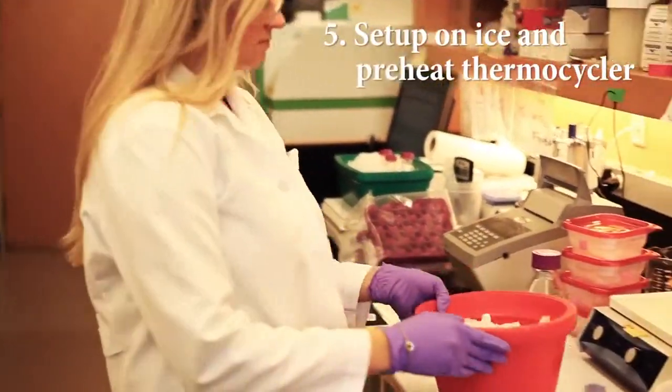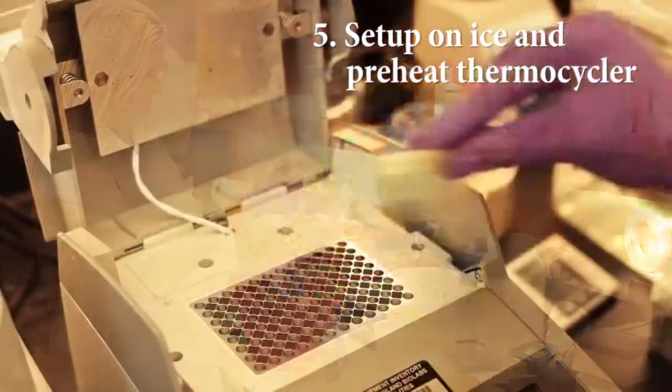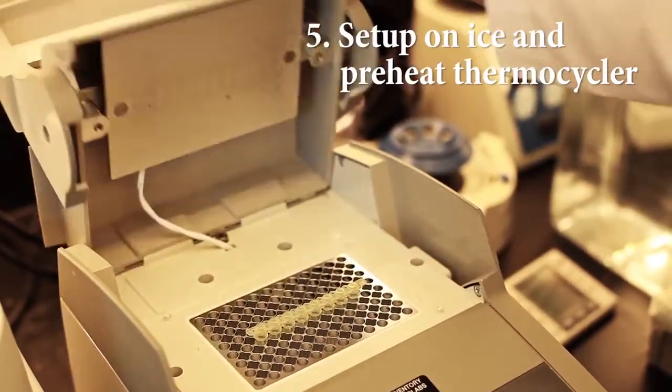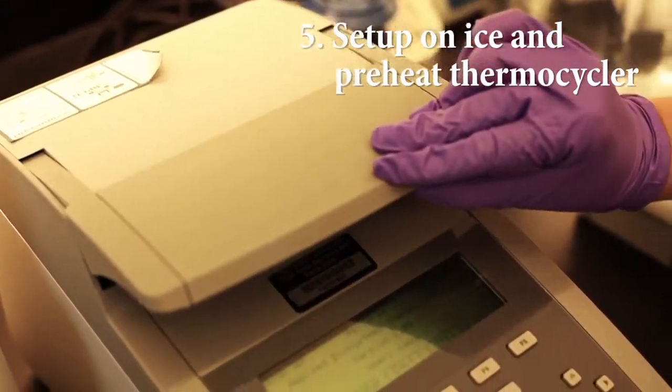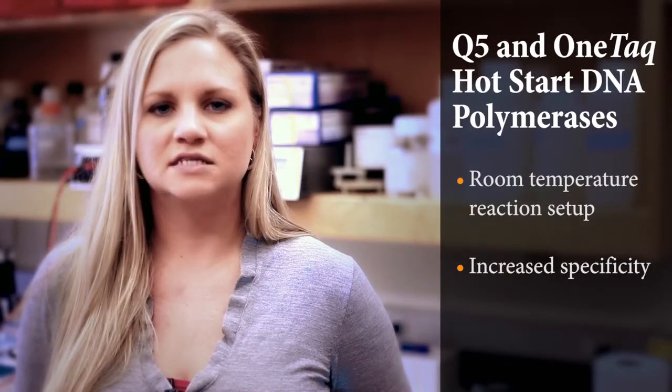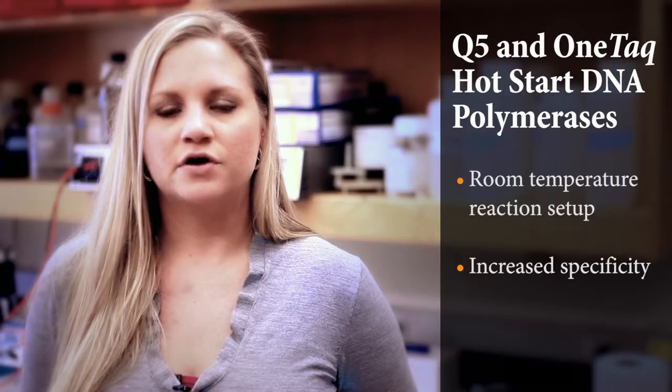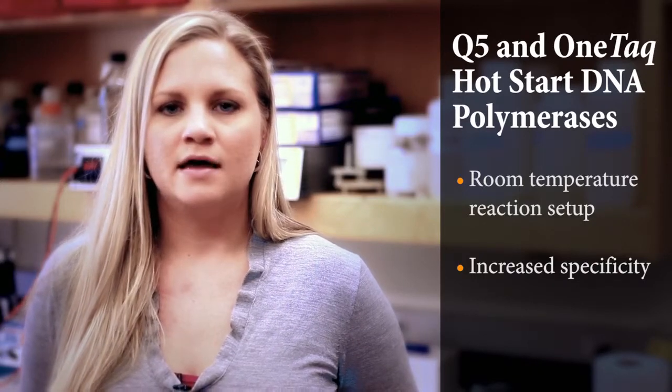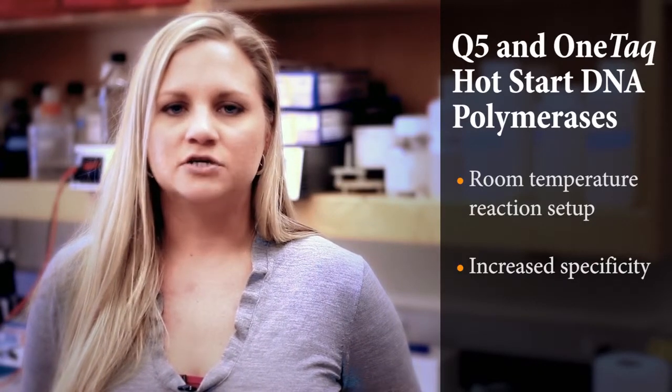Fifth, set up reactions on ice using chilled components and add the reactions to a thermocycler that's been preheated to your denaturation temperature. Alternatively, try a hot start enzyme such as our Q5 or OneTaq hot start DNA polymerases for a convenient room temperature setup and the additional benefit of increased specificity.